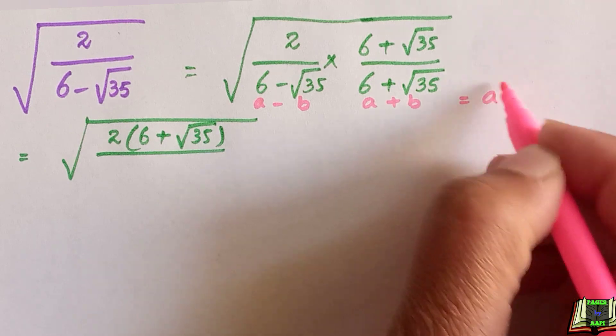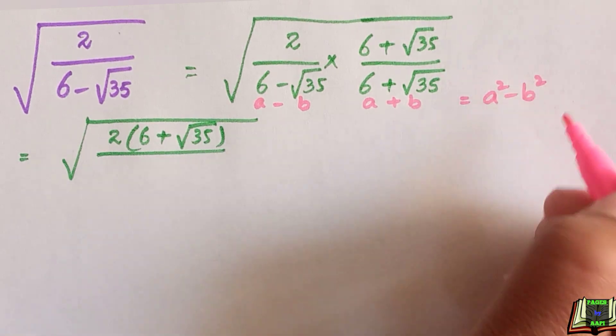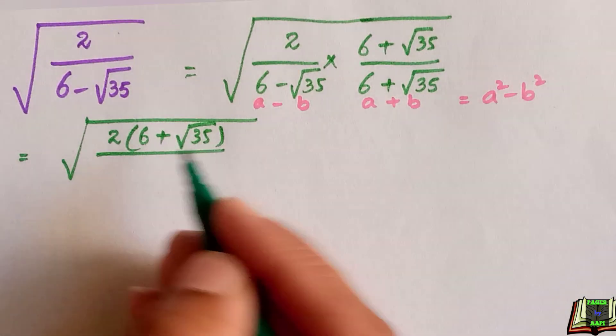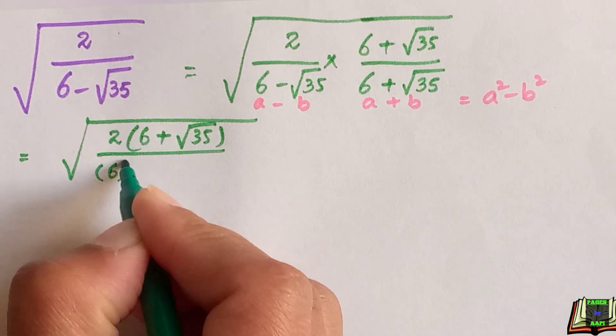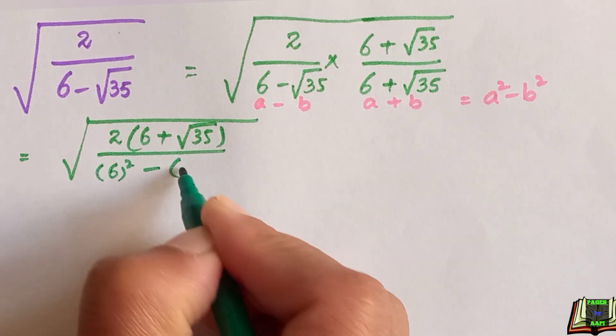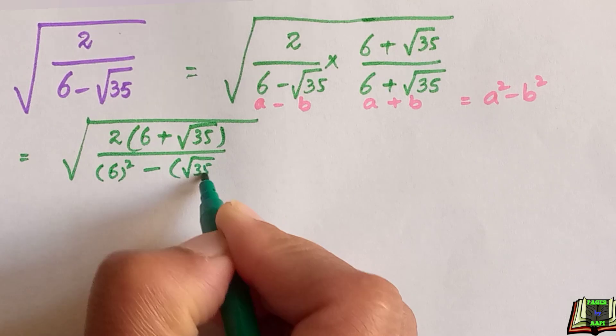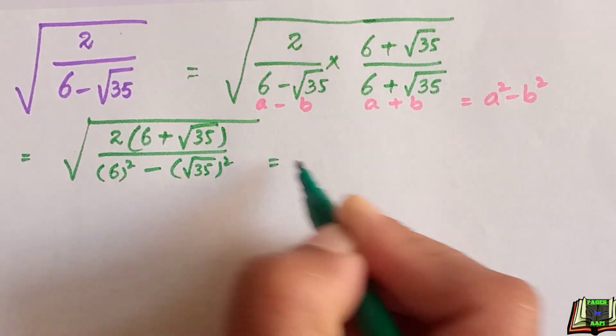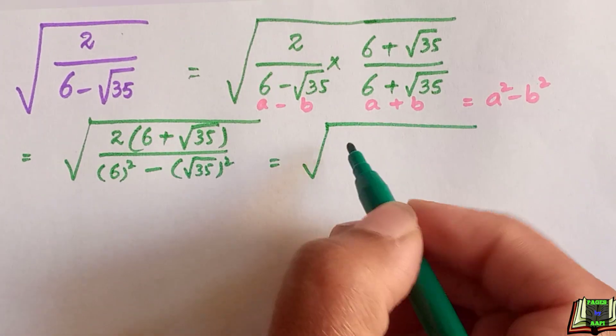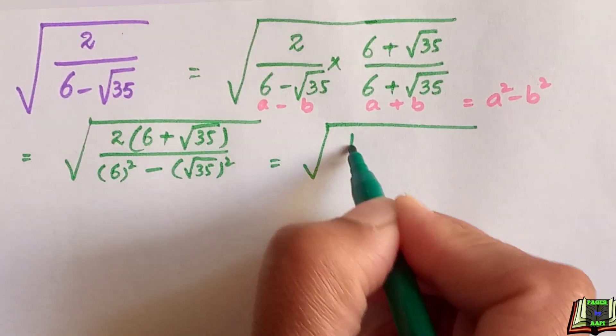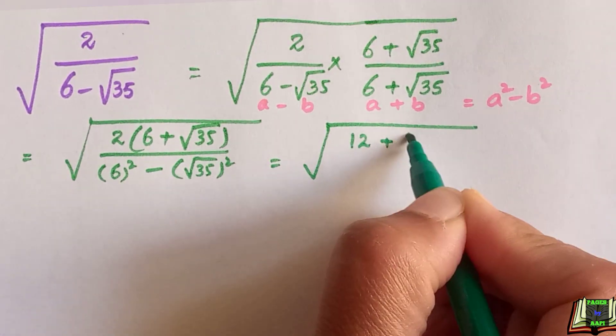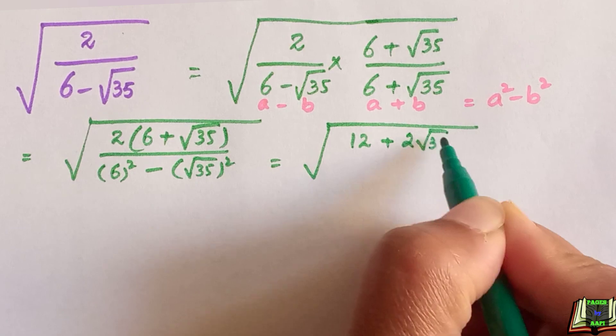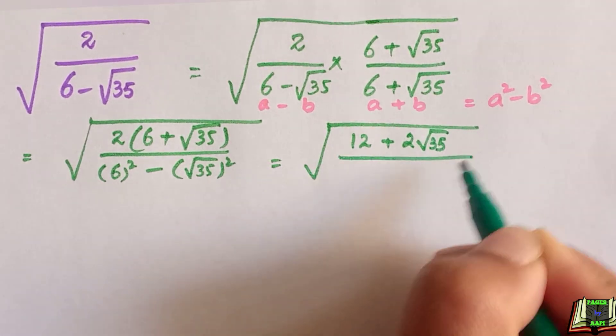If we multiply a minus b times a plus b, that is equal to a square minus b square. So it will be written as 6 square minus root 35 square. It is equal to 2 times 6 is 12 plus 2 times root 35 is 2 root 35, divided by